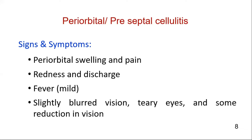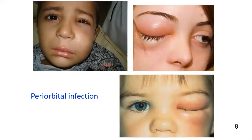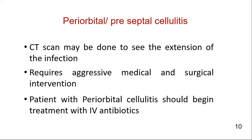The patient with preseptal cellulitis may present with redness, swelling and pain in the periorbital area, mild fever, slightly blurred vision, teary eyes, and some reduction in vision. Redness and swelling of the eyelids is seen in these photographs. CT scan may be done to see the extension of the infection. Periorbital cellulitis requires aggressive treatment and should be treated with IV antibiotics in order to prevent further spread to orbital cellulitis and cavernous sinus thrombosis.